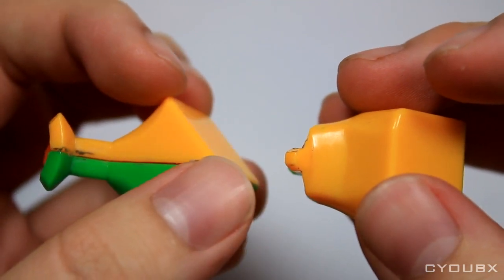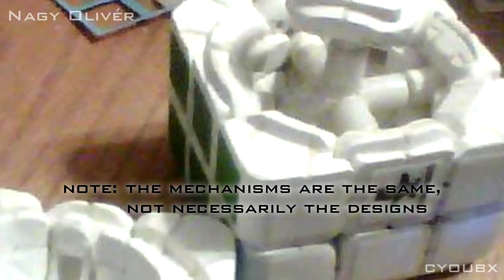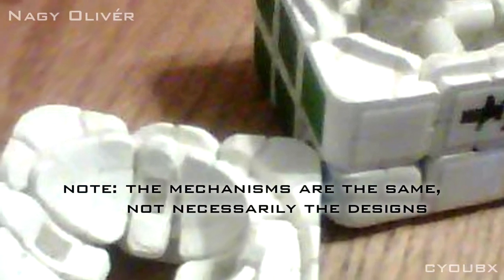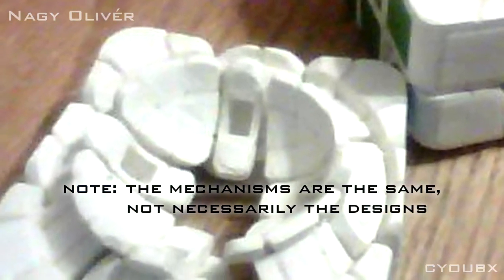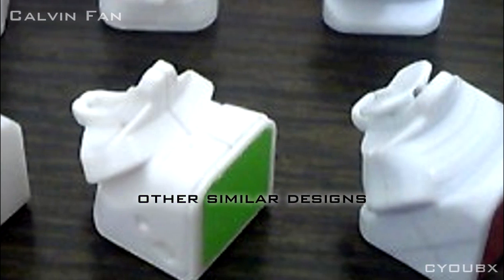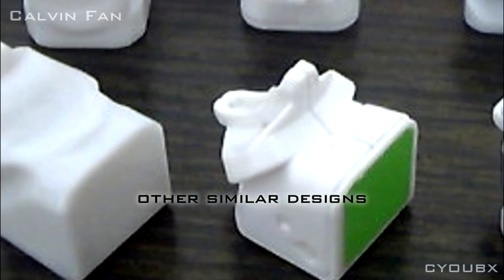It might be hard to believe, but the Gu Hong's mechanism is identical to that of a bandage V Cube 6. V Cubes had a legal tussle with Diane over patent infringement, but never brought this up. Had V Cubes noticed this particular similarity, they would have had a much stronger case.